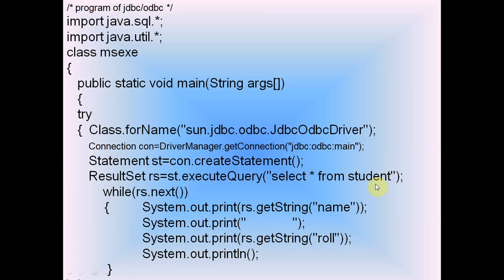So we are printing records extracted from the student table using the SELECT query. These four statements — loading the driver, making the connection, creating the statement, and executing the query — are always used for database connectivity. You must remember all four. They are used in JSP, Java Servlets, Java Beans, and everywhere database connectivity is needed. The same pattern of database connectivity is also applied in C#/.NET.